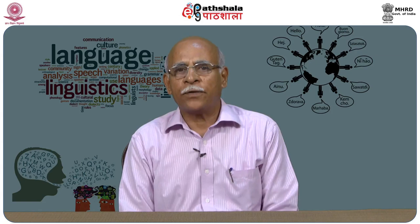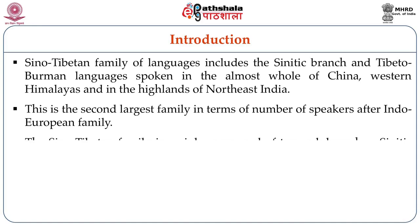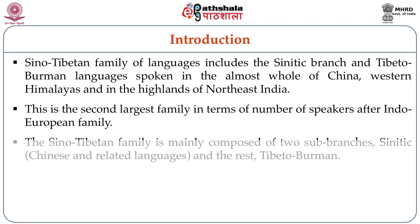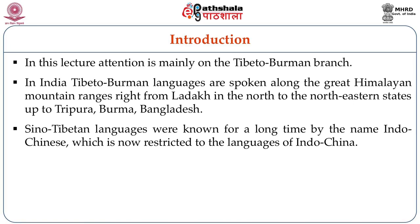In this course, we try to see what is known till today. The Sino-Tibetan family includes the Sinitic branch and Tibeto-Burman languages, spoken in almost the whole of China, the Western Himalayas, and the highlands of Northeast India. This is the second largest family in terms of number of speakers after the Indo-European family. It is mainly composed of two sub-branches: Sinitic, which includes Chinese and related languages, and the rest Tibeto-Burman. In India, Tibeto-Burman languages are spoken along the Great Himalayan mountain ranges, from Ladakh in the north to the northeastern states up to Tripura, Burma, and Bangladesh.